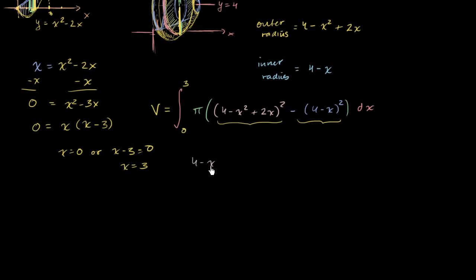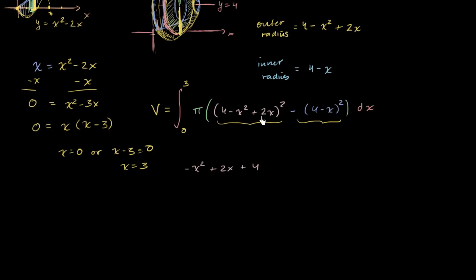So we're going to have negative x squared plus 2x plus 4 — I just switched the order of the terms — times negative x squared plus 2x plus 4. So we're just going to multiply these two things.